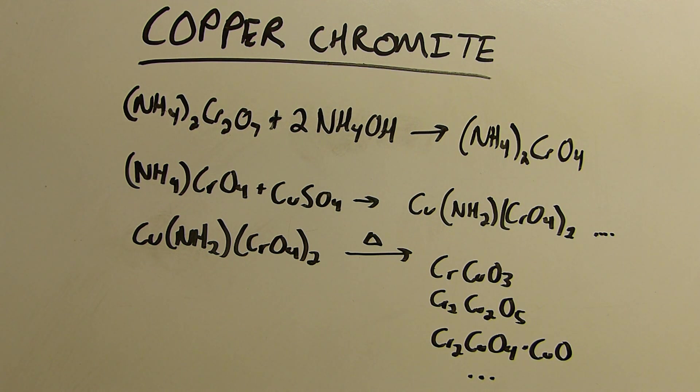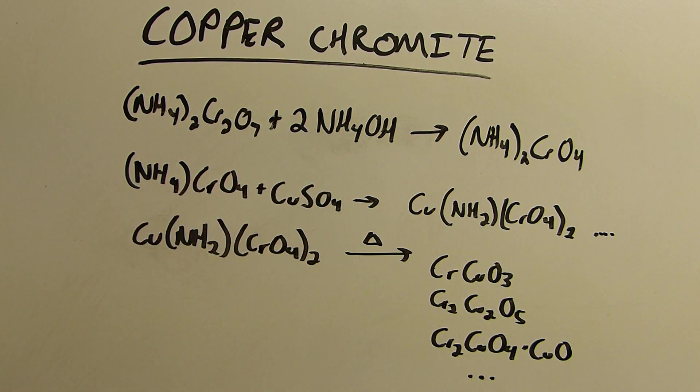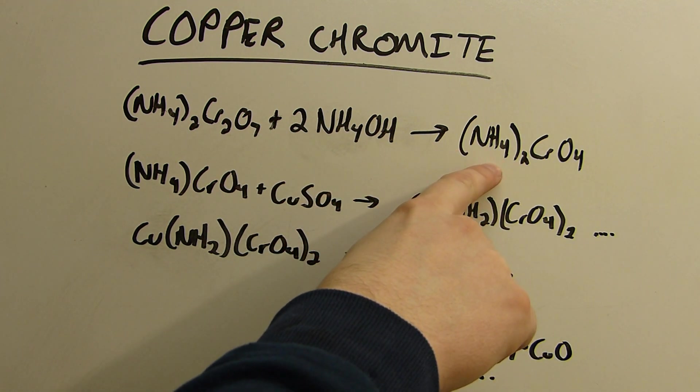Now I don't have ammonium chromate, so I'll be making it from ammonium dichromate. If you watch my video on chromium trioxide, you'll understand that if I add a base to a solution of dichromate, I can force the equilibrium toward chromate. So essentially I'll be reacting one equivalent of ammonium dichromate with two equivalents of ammonium hydroxide, which is the ionized form of ammonia dissolved in water. And that will react to form two equivalents of ammonium chromate.